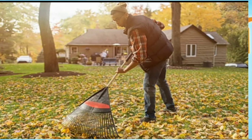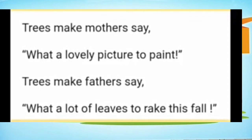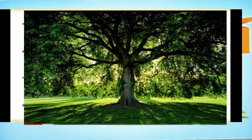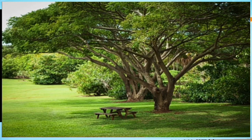Mother says trees are very nice because it is easy to draw and paint them, but regarding father's opinion — it is their duty to gather all the leaves and clean the ground. So father says 'What a lot of leaves to rake this fall!' It is very difficult to clean the ground during autumn season. The poet concludes that trees are very important; they are essential for human beings as well as birds and animals.